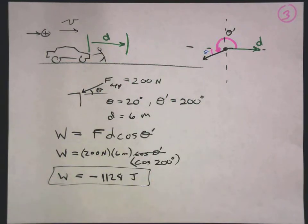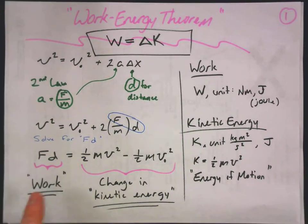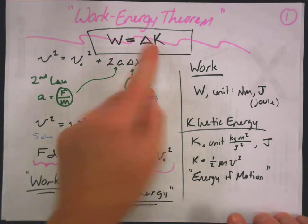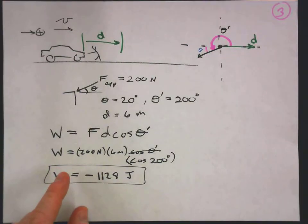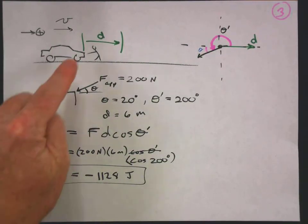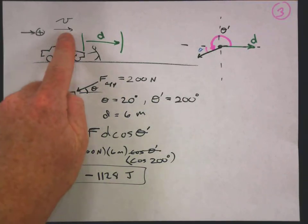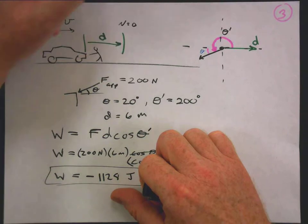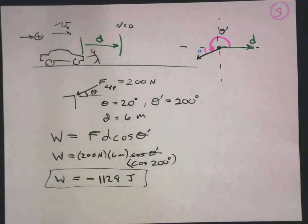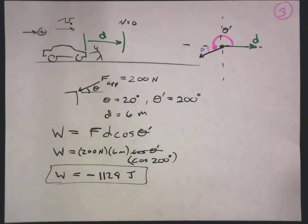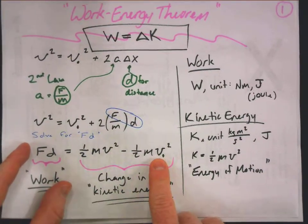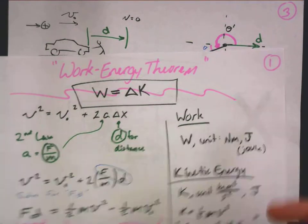Negative work means the change in kinetic energy is negative, per the work-energy theorem. That makes sense — you stopped the car, taking away its kinetic energy. The car ended with zero kinetic energy. The change in KE is final minus initial: zero minus some positive value gives a negative change. Negative work, negative change in kinetic energy. It all fits.